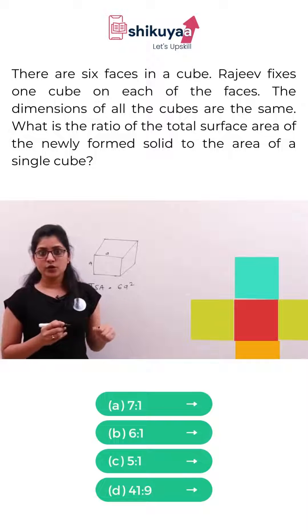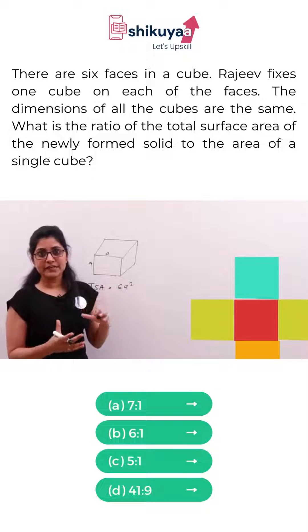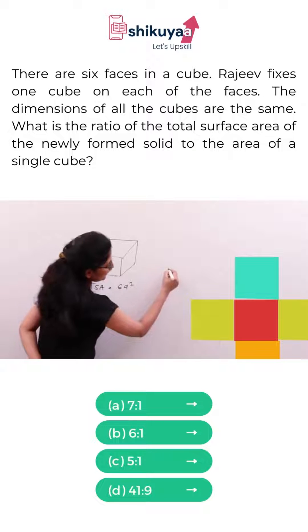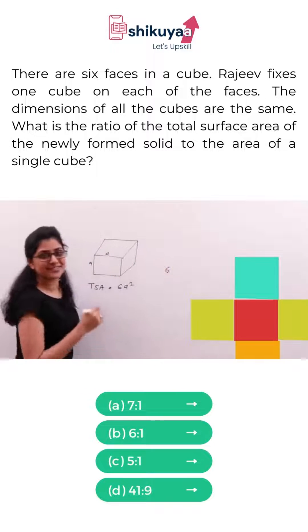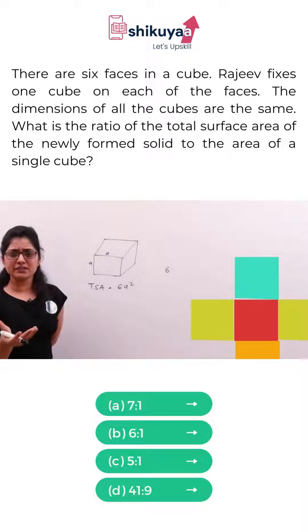So now, right now, your outer object is with six cubes. And each having the surface area of six A square. So that should be six A square.